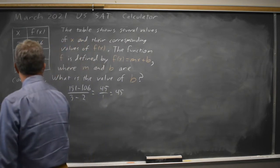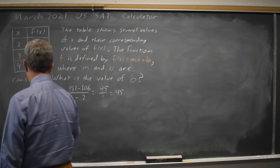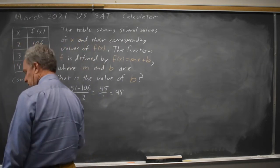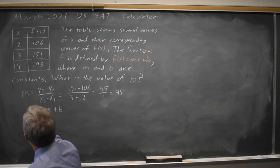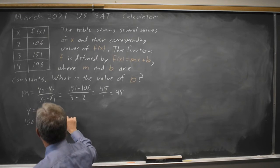My equation is y equals 45x plus b, and if I put any point that they've given me in here, for example, x equals 2, then 106 equals 45 times 2 plus b.